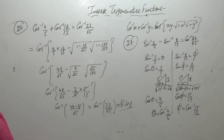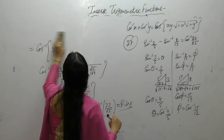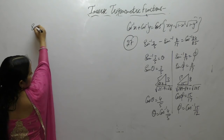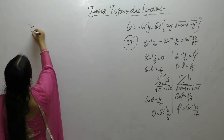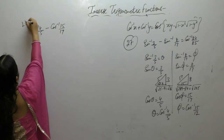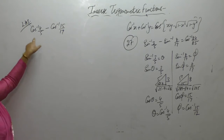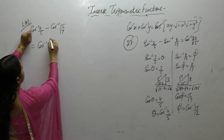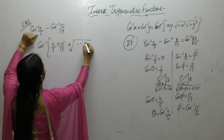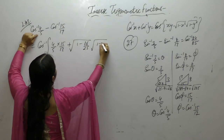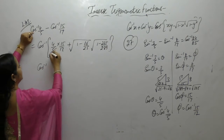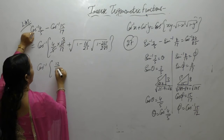Now use these values. We get cos⁻¹(4/5) minus cos⁻¹(15/17). On the left hand side, apply the formula: cos⁻¹x - cos⁻¹y = cos⁻¹(xy + √(1-x²)√(1-y²)). This gives cos⁻¹(12/17).